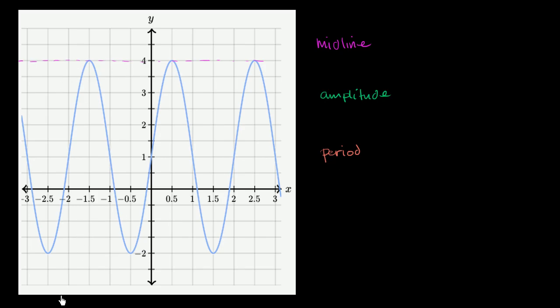And what's the lowest value that this function gets to? Well, it gets to y equals negative 2. So what's halfway between 4 and negative 2? Well, you could eyeball it or you could count, or you could literally just take the average between 4 and negative 2.